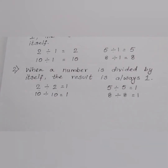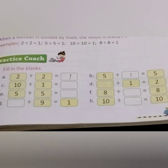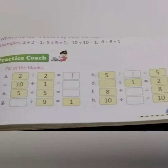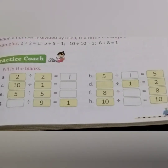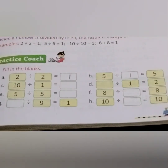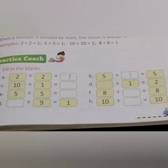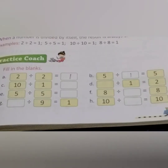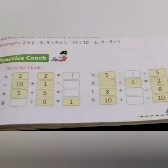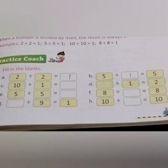Now let us do some exercise. Look at the first question: 2 divided by 2 is equal to 1 — same number. 5 divided by dash equals 5. Here, you have to find out when the same number 5 comes as the answer. When we divide it by 1, we will get the same number. So, 5 divided by 1 is 5.